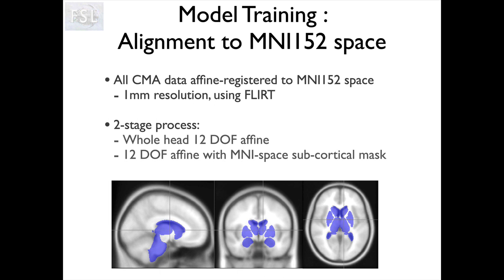What FIRST does — both in terms of building the model and when processing your data — is relate the model it has learned to the images you're working with, and it does that through registration, because we work in a standard space. There is a registration process to standard space. One step is a fairly standard affine registration to the one-millimetre standard space template using the FLIRT registration tool. The second step is not a non-linear process but actually another affine registration, refined to concentrate on subcortical features, so it's better at aligning the subcortical structures and may be worse at aligning the edge of the brain and cortex.